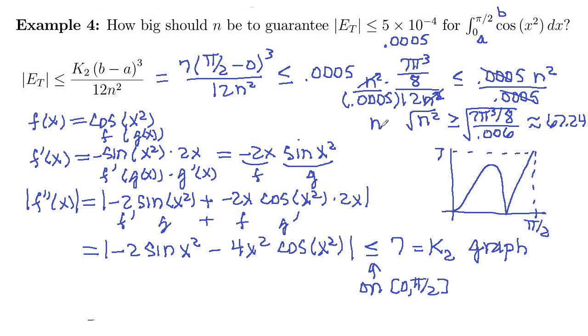And that's our n squared of n squared. And we would round that up to 68. Because you can't have a fractional number of intervals. So as long as n is greater than or equal to 68, our error will be less than 0.0005.